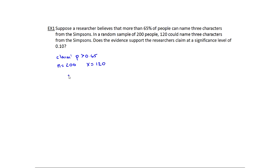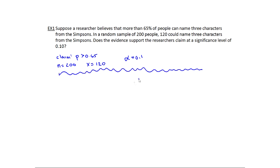The question asks: does the evidence support the researcher's claim at alpha equals 0.1? As long as our sample sizes are big enough — and usually what you're looking for is at least five successes, which we have — then you're able to say the sampling distribution for p-hat is going to be normal, and that means I can use a z-test. The test we're going to use is called a one-prop z-test.